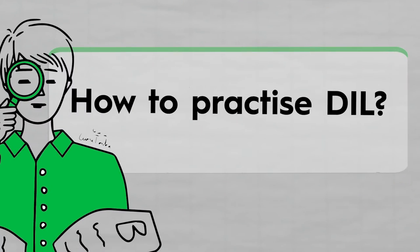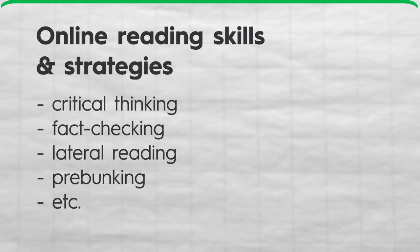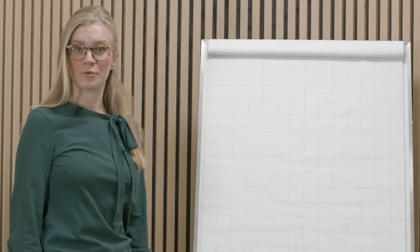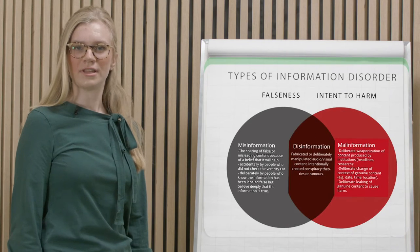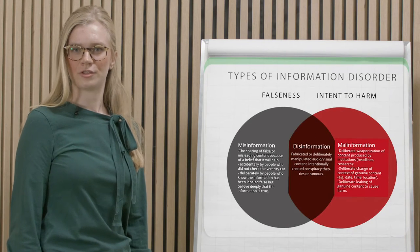Fortunately, there are proven ways that help us understand and evaluate digital information. These online skills and strategies help you to recognize and tackle inaccurate information, propaganda, manipulation and conspiracies — in other words, the three types of information disorders.